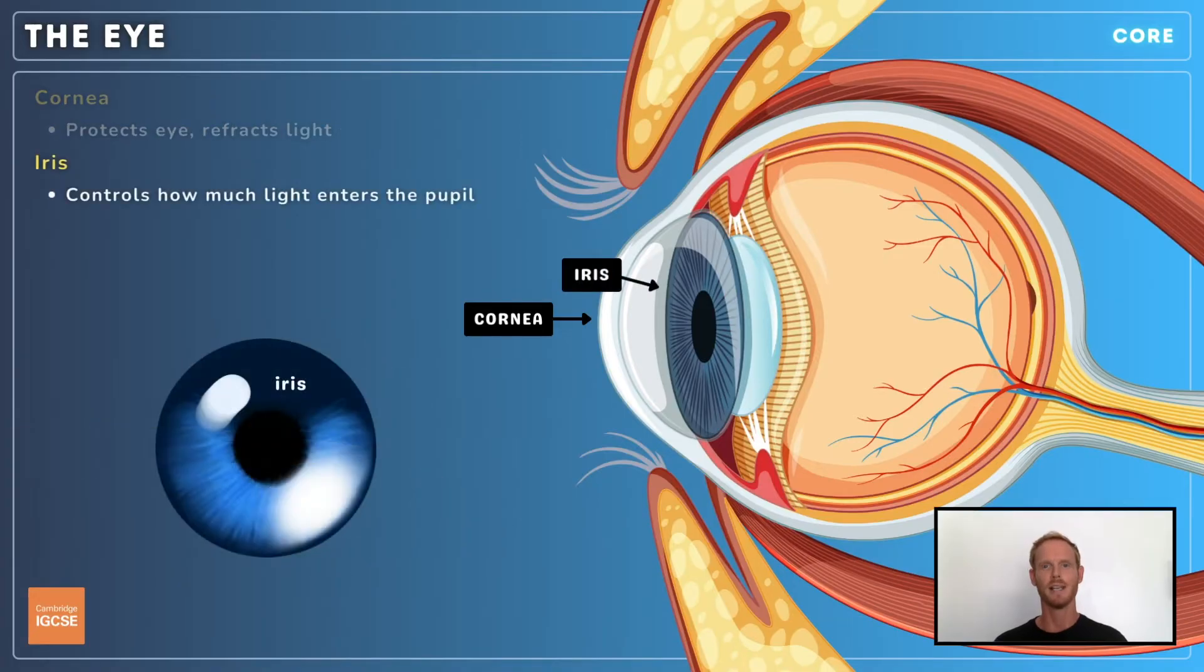Behind the cornea is the iris, a coloured ring of muscles that controls the size of the pupil. The pupil is the circular opening at the centre of the iris that lets light into the eye.